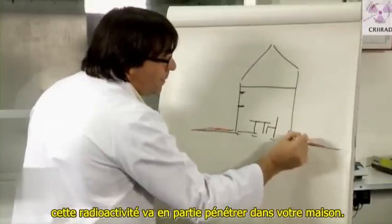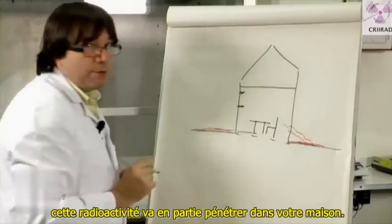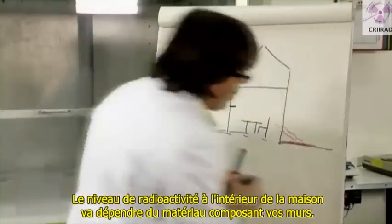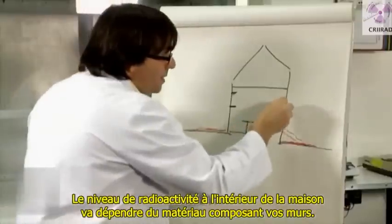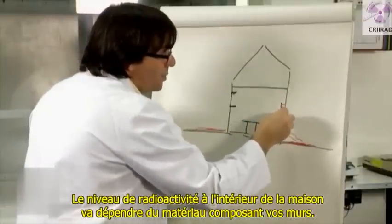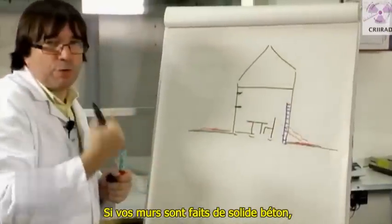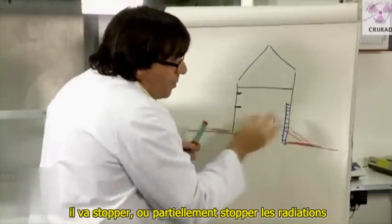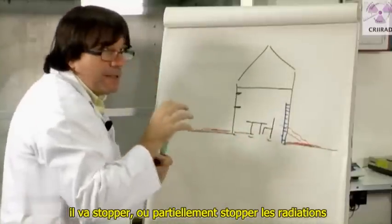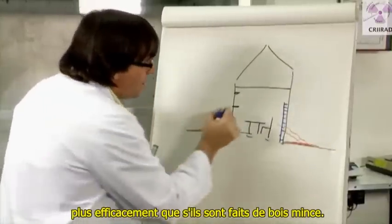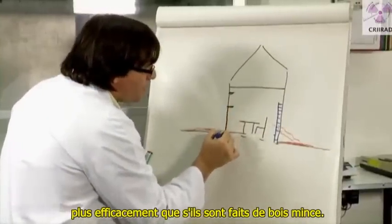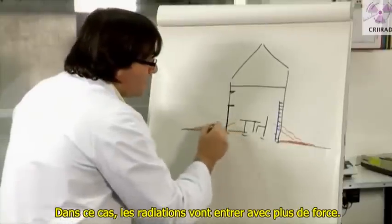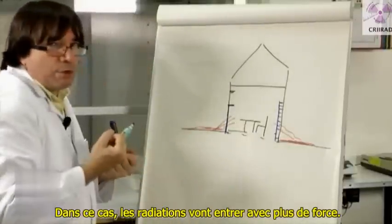will partly enter your house. The degree of radiation inside the house will depend on the material of your walls. If your walls are made of strong concrete, it will stop or partly stop radiation more efficiently than if it's made of a small wooden wall. In this case, radiation will enter more strongly.